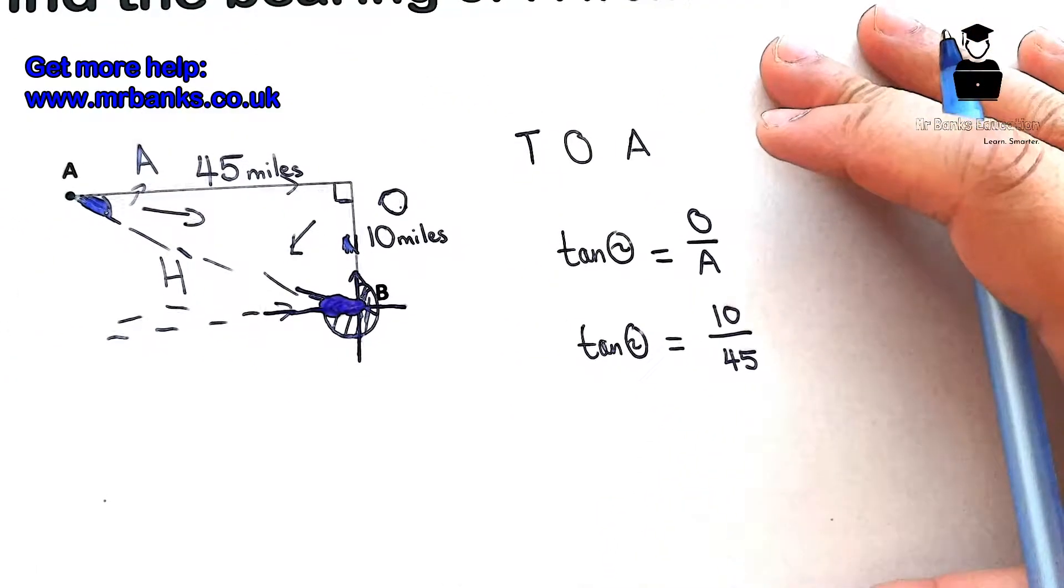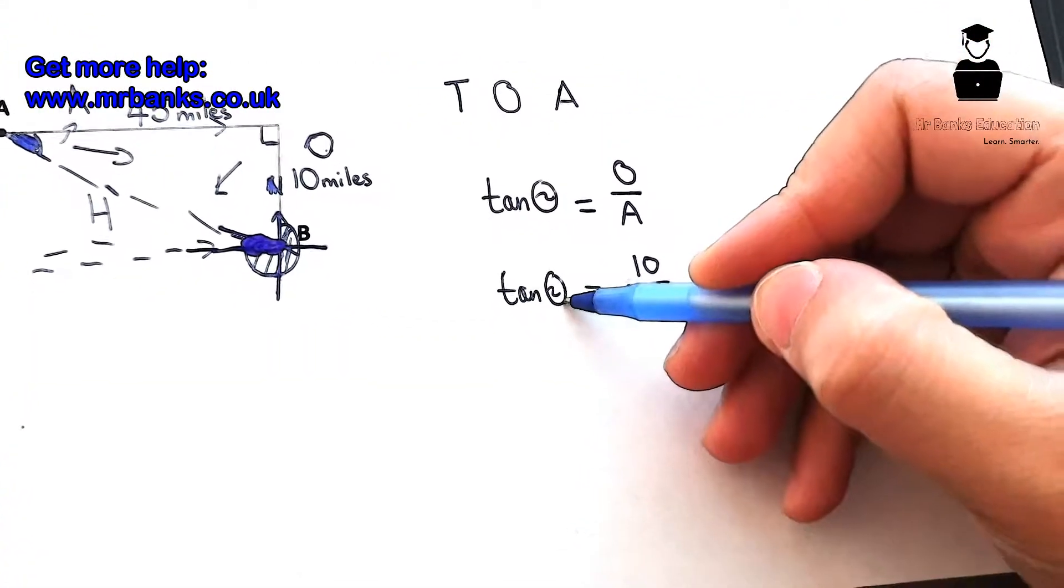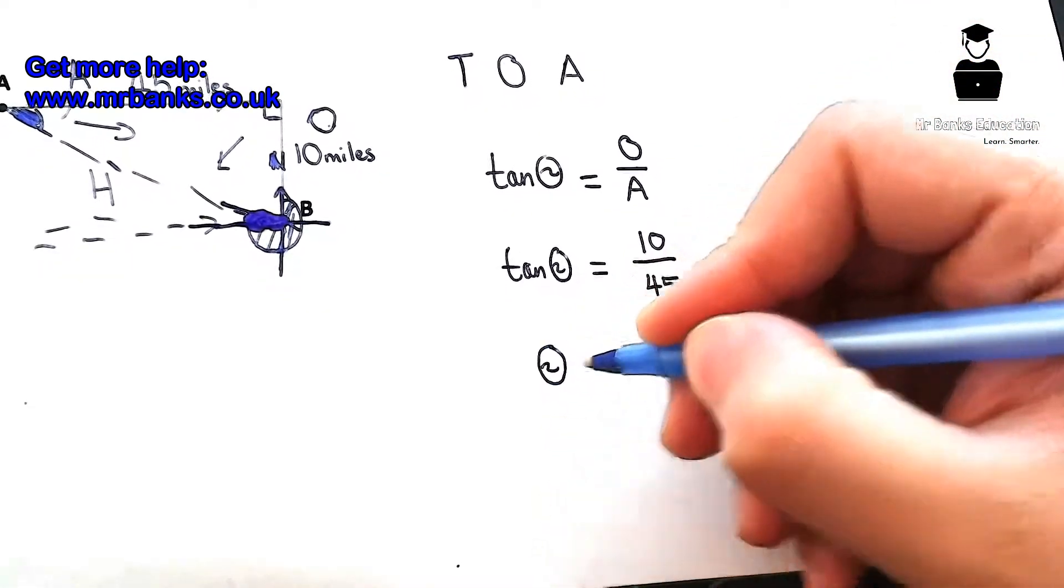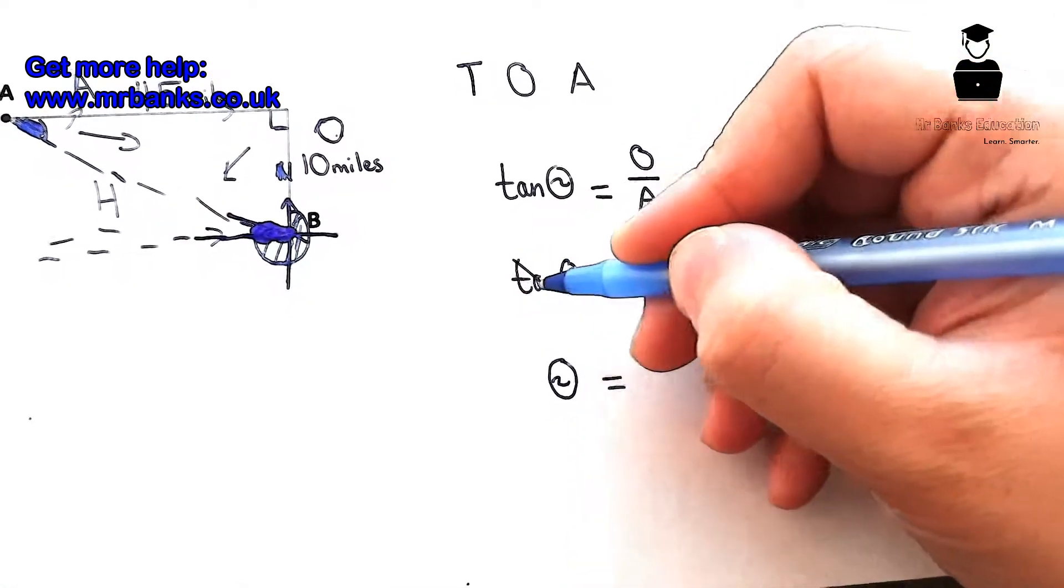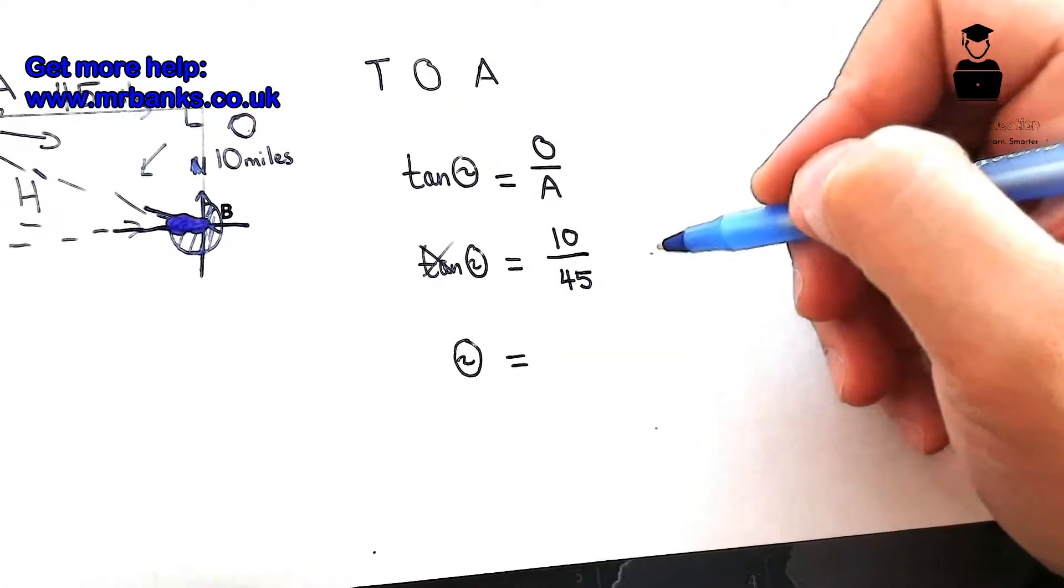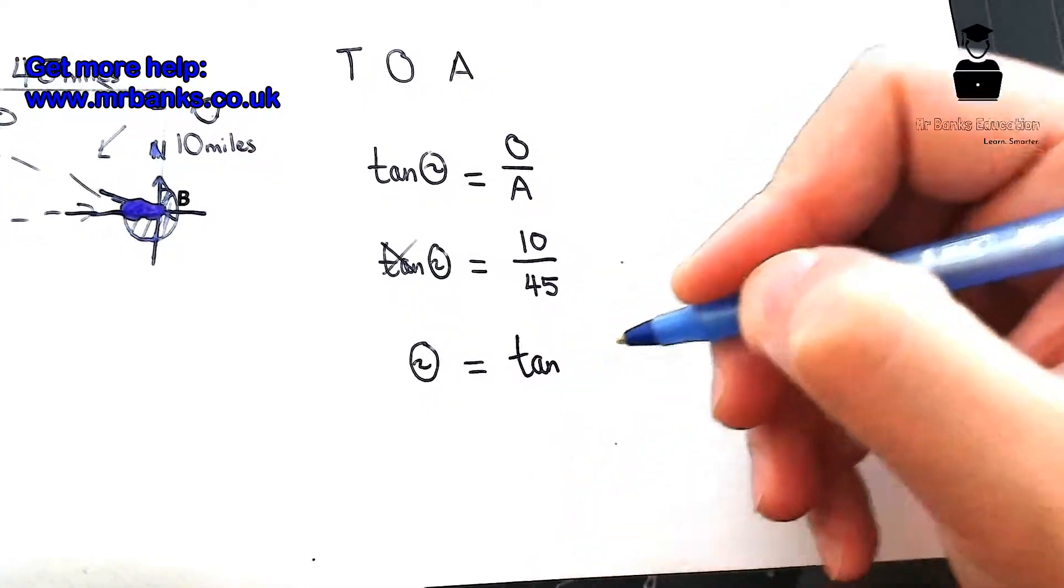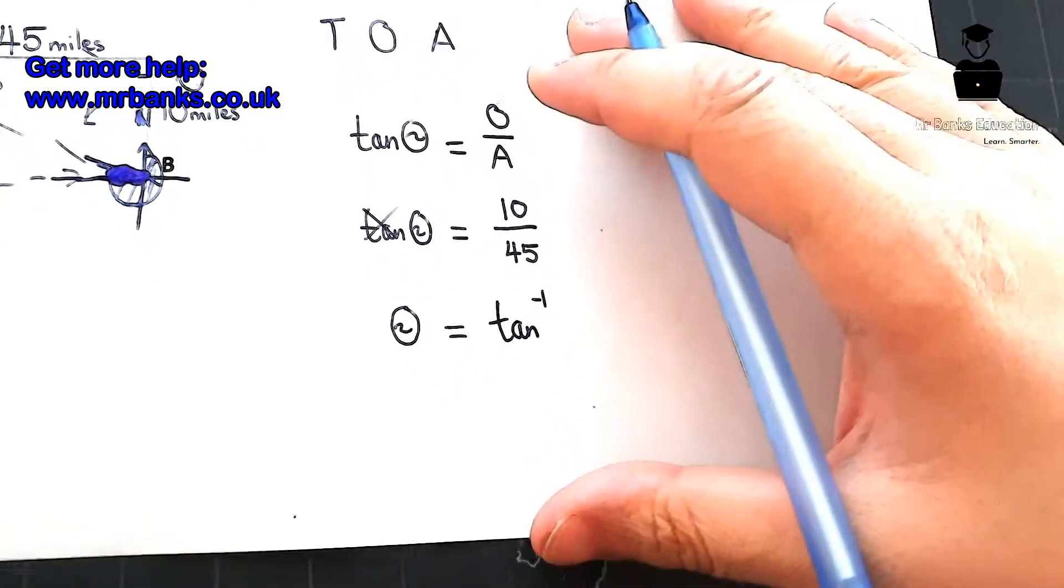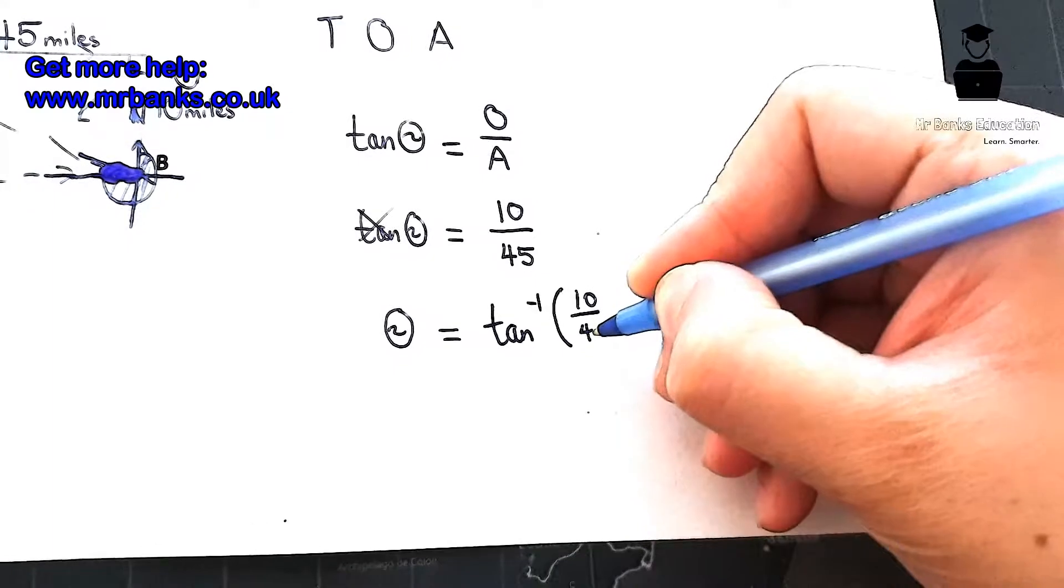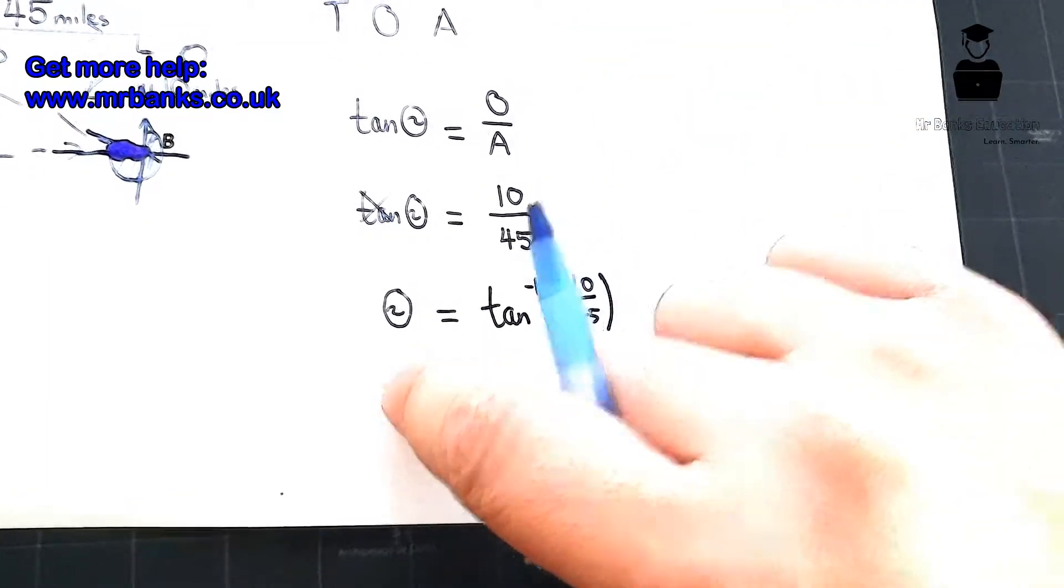Now what we want to find out is the angle, theta. But there's a tan in front of it right now. We just want it to say theta the angle, but we can't just cross this tan out. We need to do an inverse function. We need to put that tan over here and the inverse has to be on the other side. So what's the opposite of tan? Tan inverse, which on the calculator is tan minus one. Then you put this in there, 10 over 45. If we do that, we're going to get our angle.